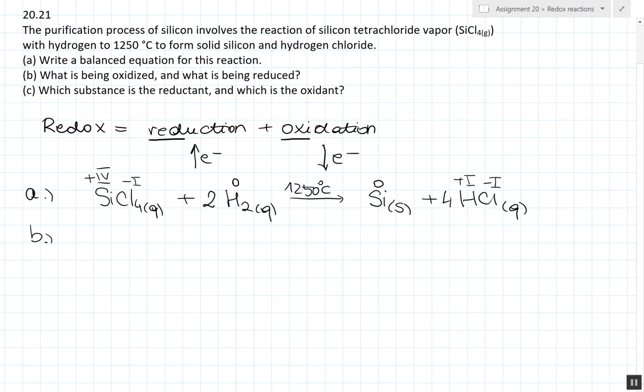Now we know that silicon decreases its oxidation number from plus 4 to 0 by accepting 4 electrons, while hydrogen increases its oxidation number from 0 to plus 1 by giving 2 electrons. In order to balance the electrons in the two half reactions, we have to multiply the second half reaction by 2.